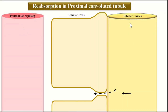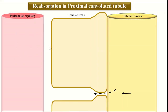Substances being reabsorbed follow the route from the tubular lumen into the tubular cells, then into the interstitium, and from the interstitium they move into the peritubular capillaries via bulk flow. Bulk flow is highly dependent on Starling forces. The Starling forces at the glomerulus favor filtration, while at the peritubular capillaries the hydrostatic pressure and colloid osmotic pressure favor reabsorption.